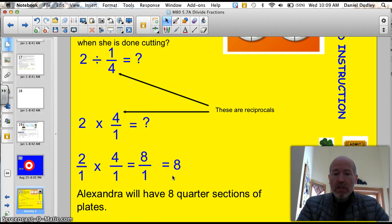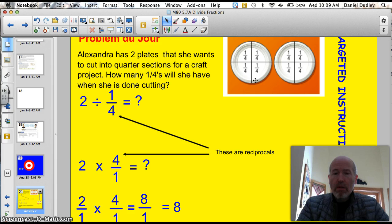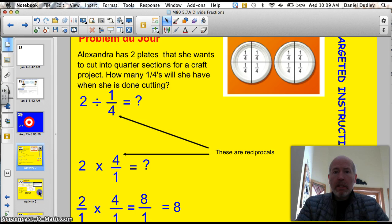Alexandra will have 8 quarter sections of plates, just like we drew. Only we did it by dividing fractions. How cool is that? It's only going to get better.